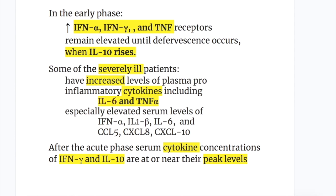Interleukin 10 causes immunoparalysis. Some severely ill patients have increased levels of plasma pro-inflammatory cytokines including interleukin 6 and TNF-alpha, with especially elevated serum levels of interferon alpha, interleukin 1 beta, interleukin 6, and other cytokines. After the acute phase, serum cytokine concentrations of interferon gamma and interleukin 10 are at or near their peak levels.